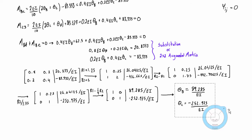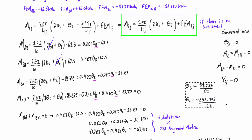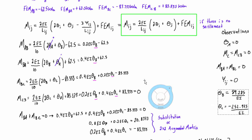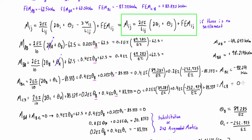With theta-B and theta-C solved, we plug them back into each of the moment expressions. We get M-CB equal to zero, which is what we expected, and M-BA plus M-BC also equals zero when added together, confirming we've done it correctly.